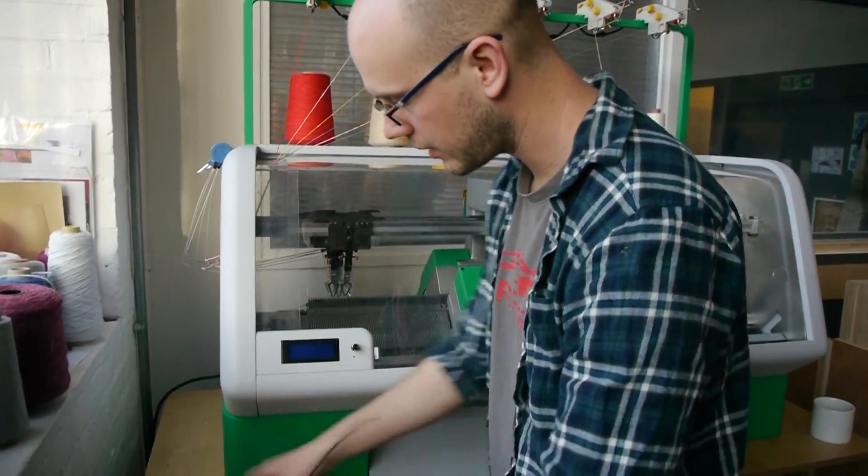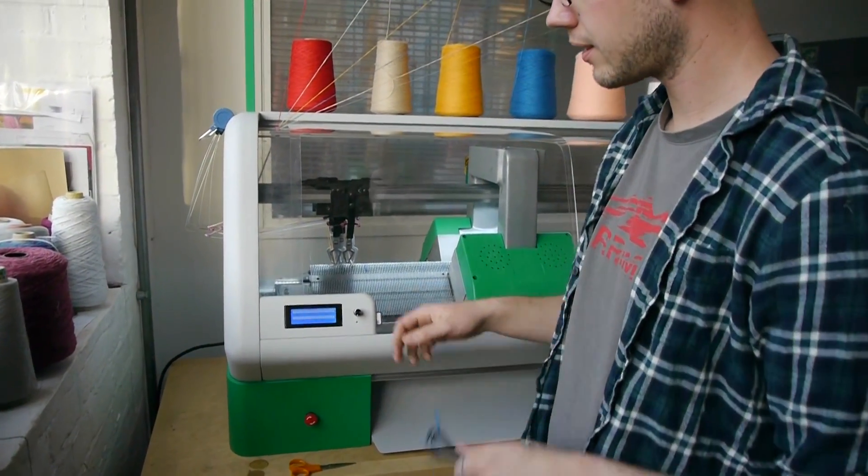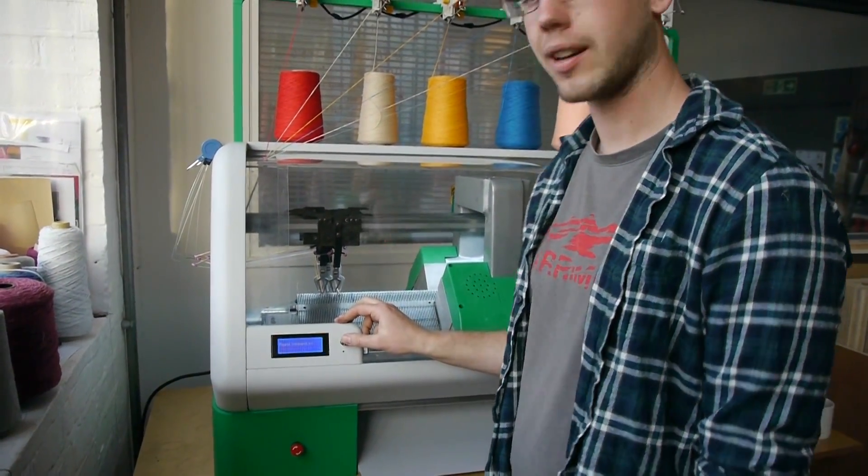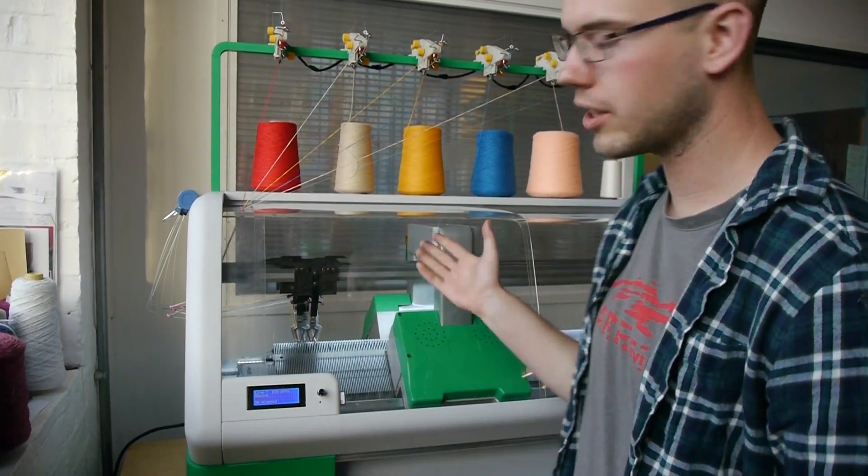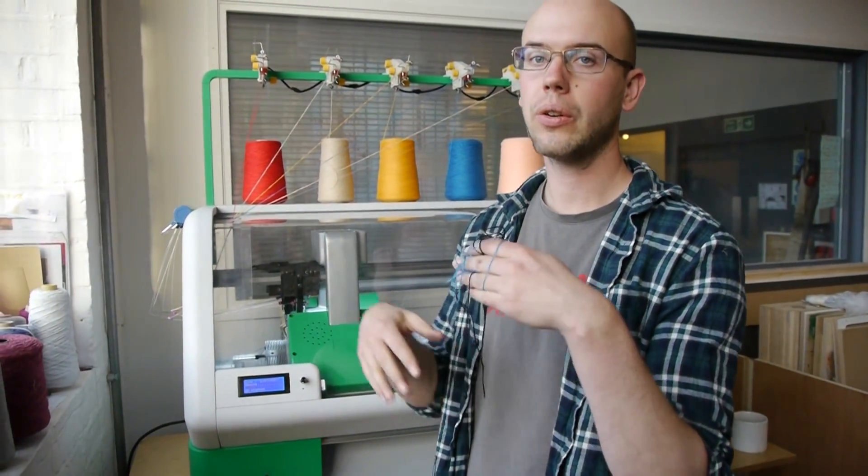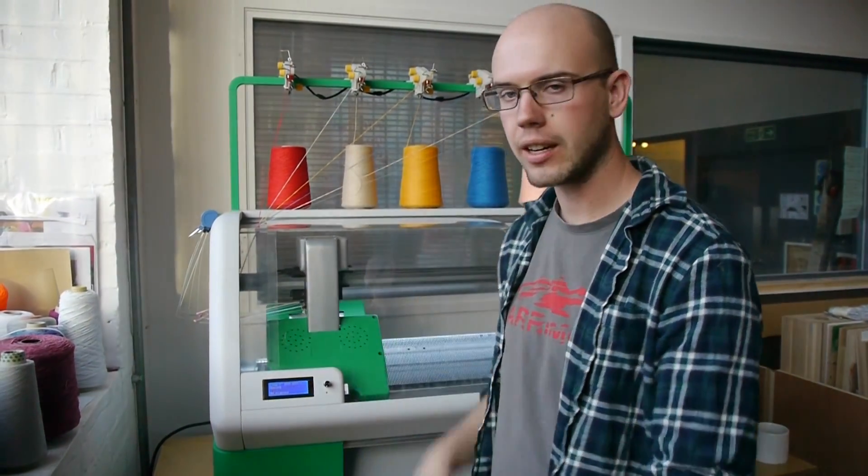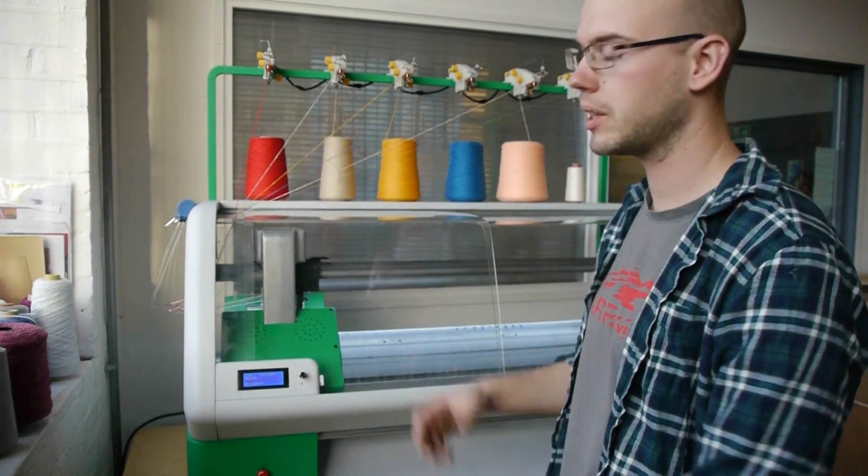And then you have to close the machine before it will let you run it. And then simply turn the machine on. Press knit. So the machine is going to go through some homing operations, so it knows where the carriage is, it knows where all the gates and the yarn carriers and everything are. And then it's going to start knitting with some rows of waste yarn to begin with.